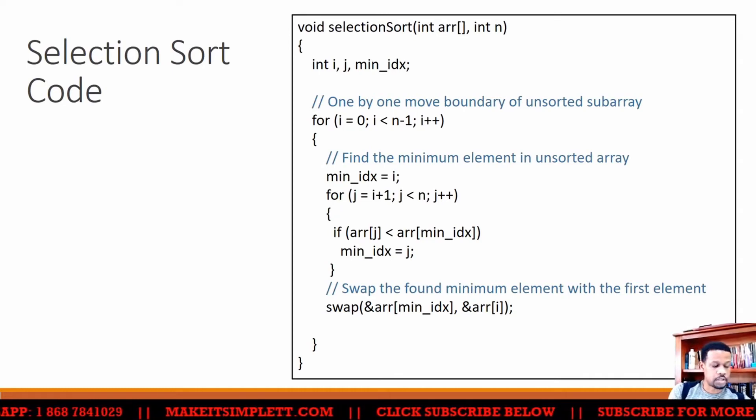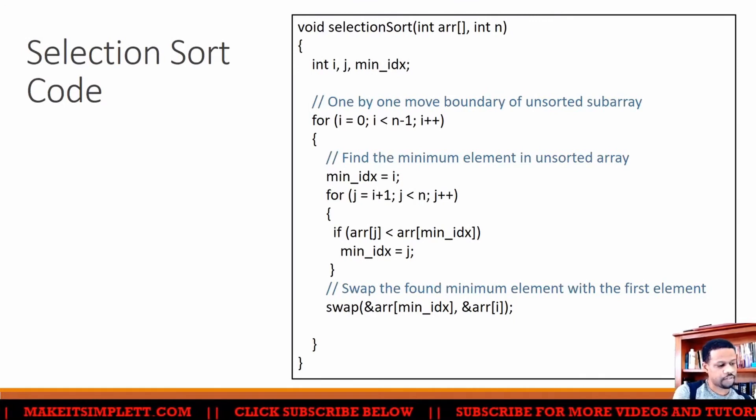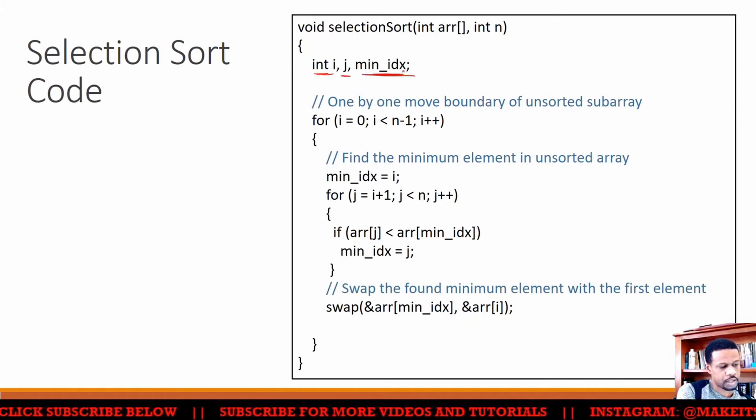So the code for Selection Sort is going to be like this. I have comments inside of it to make it easier to understand. I have an integer i and an integer j, and I have a minimum. That's what I need. Of course, this is the array and this is the size n. My first loop is...